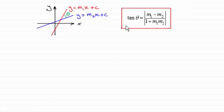Well, it can be shown that the tan of the angle theta is given by the modulus of m1 minus m2, all divided by 1 plus m1, m2. And it doesn't really matter if you put m2 minus m1, because we're taking the modulus we're always going to get the positive value.